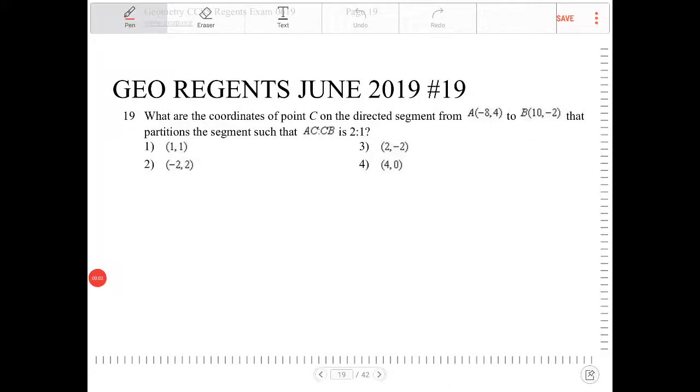What are the coordinates of point C on the directed segment from A(-8, 4) to B(10, -2) that partitions the segment such that AC to CB is 2 to 1?